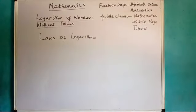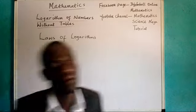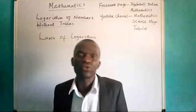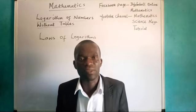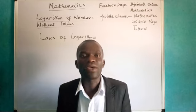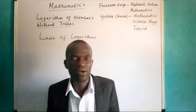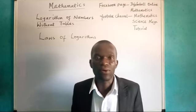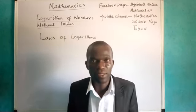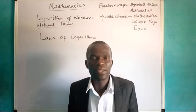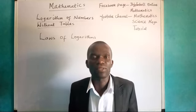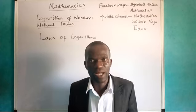Now, looking away from that, everyone look at the log of one to any base. The log of one to any base is simply zero. If you still have your calculator, press the log of one and you will get zero.